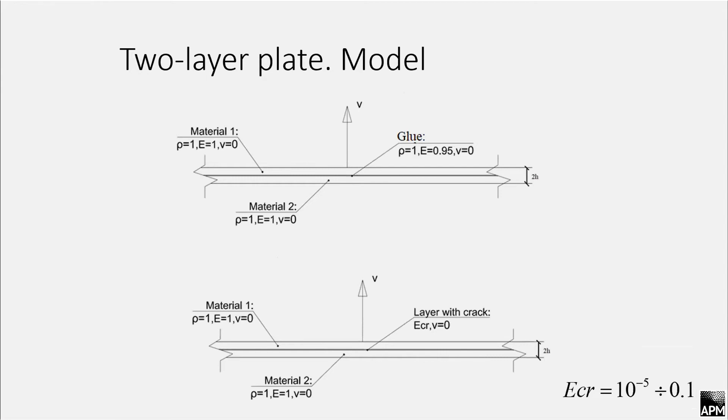Here, this model consists of two layers connected between themselves with a glue layer. Model materials with density and Young's modulus equaling to one are used, and the modulus of elasticity for the glue is equal to 0.95.